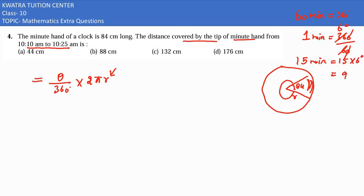So our theta is 90 degrees. 90 over 360 which is 1 by 4, and 2 as it is, pi ki value 22 by 7 rahegi, aur r is 84. 7 se 84 cancel ho jayega.